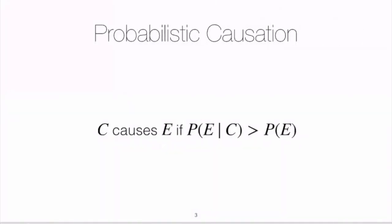The first approach is sometimes called the probabilistic approach. The main idea is that causes raise the probability of their effects. We might say that C causes E if the probability of E given C is greater than the probability of E alone. For example, rain causes the lawn to be wet if the probability of the lawn being wet given that it rained is greater than the probability of the lawn being wet alone. That seems plausible, but there are counter examples, and this definition doesn't quite capture everything we mean by causality.